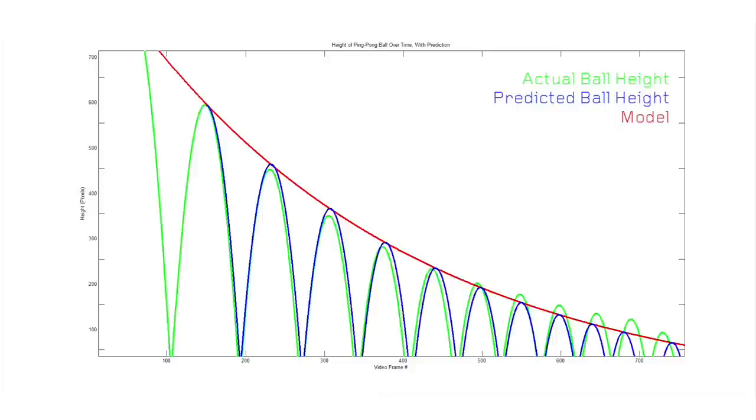Each bounce is a parabolic path with a vertex lying somewhere on the energy curve. Using the fact that the next parabola intersects with the previous one at the floor, the vertex of each parabola can be found one after the other using only the previously predicted parabola and the predicted energy function.